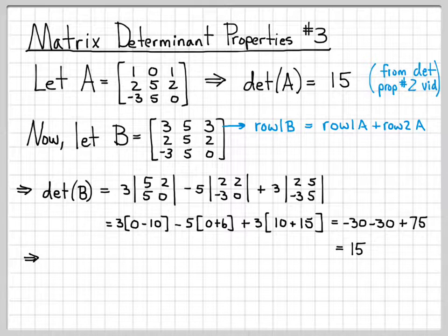So that's interesting. We have the determinant of B is equal to 15, and previously, we computed the determinant of A as 15.